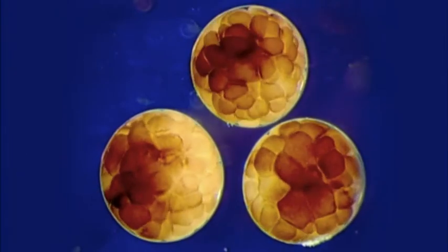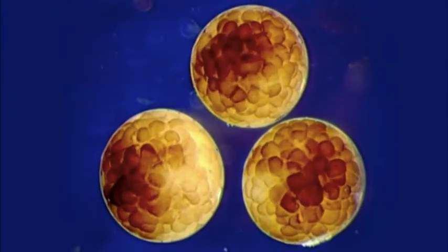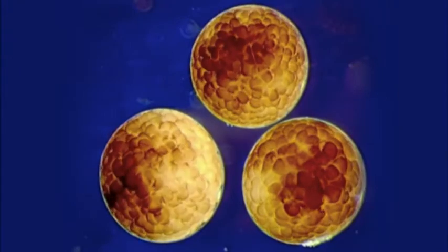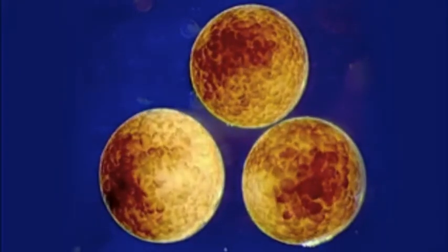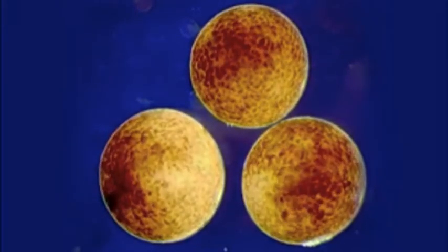With animals like frogs, whose embryos develop inside transparent eggs, it's easy to see it in action. After the egg becomes a hollow ball of many cells, some cells dive into the center, forming layers which will go on to develop into different organs.